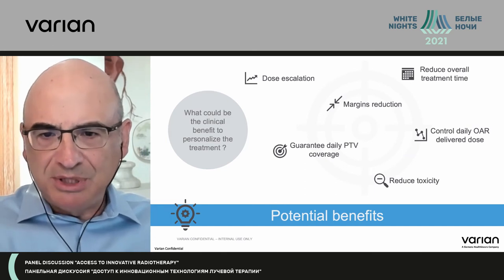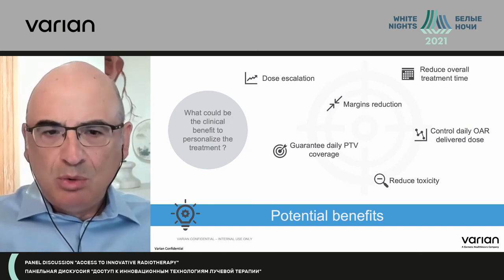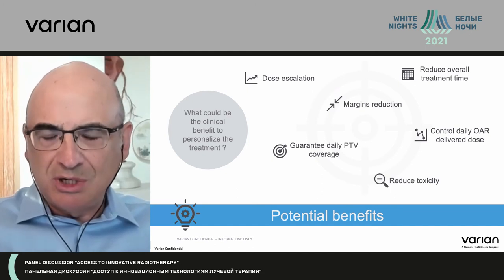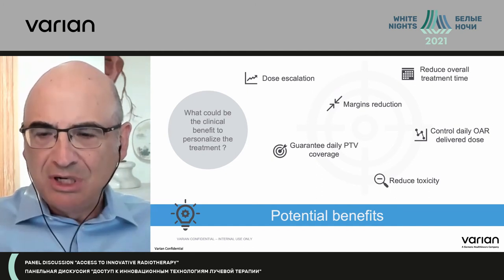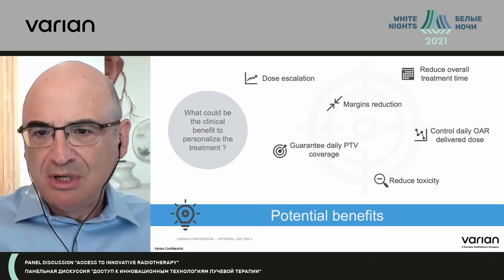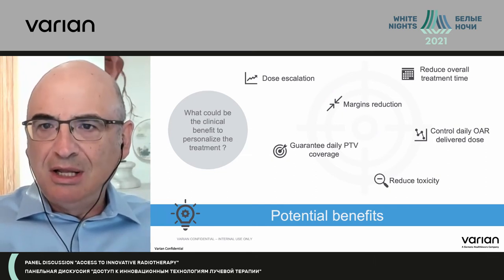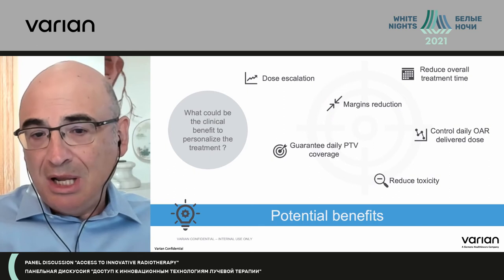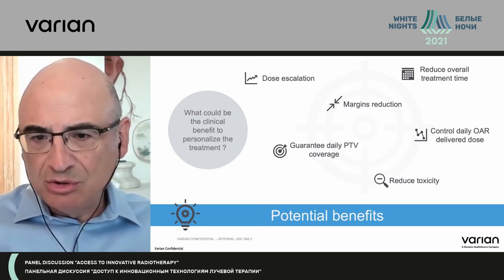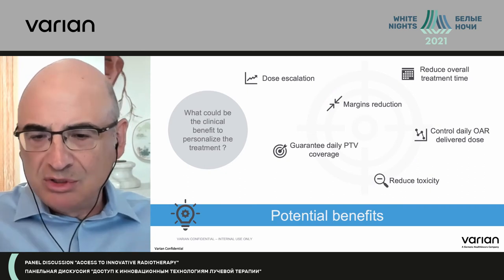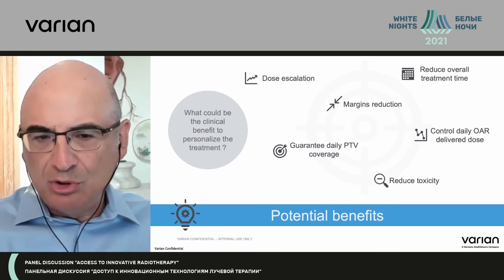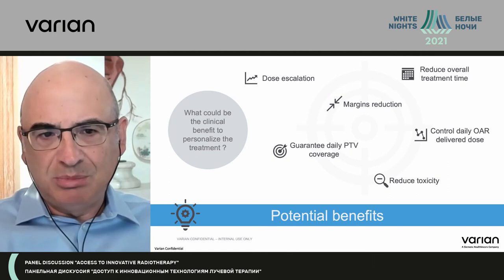What's the potential benefit once we have this tool? We can proceed with dose escalation, we can reduce margins, and we're guaranteeing PTV coverage if there's anatomy that changes a lot. We should be able to see decreased toxicity and enable shorter treatment courses. Going towards hypofractionation and SBRT-type approaches should be associated with the adaptive process — that should be an advantage.